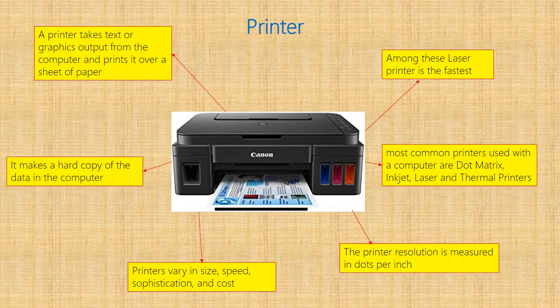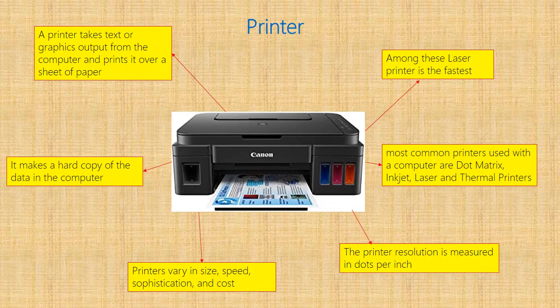The printer takes text or graphics output from the computer and prints it onto a sheet of paper, making a hard copy of the data — that is, the soft copy is converted into hard copy using the printer. Printers vary in size, speed, sophistication, and cost. The most common types of printers are dot matrix, inkjet, laser, and thermal printers. Among these, the laser printer is the fastest. Printer resolution is measured in dots per inch, or DPI.